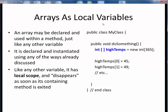Let's start by looking at arrays as local variables. We can declare and use arrays within any method just like any other variable. An array is no different from any other variable in that it has local scope within its method and disappears as soon as that method is exited. In this simple example, inside a method called DoSomething, we declare and instantiate an integer array of high temperatures and initialize its values, but as soon as we exit this method, the array disappears because it has local scope.